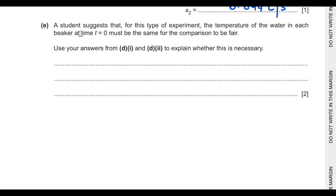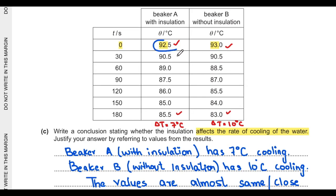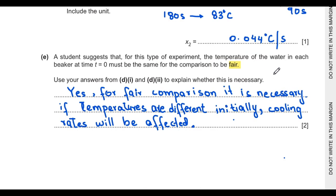Part E: a student suggests that the temperature of water in each beaker at t = 0 must be the same for a fair comparison. Beaker A was at 92.5°C and beaker B was at 93°C, which is unfair. Yes, for a fair comparison it is necessary that initial temperatures are the same, because if the initial temperature is higher the cooling rate will be greater.